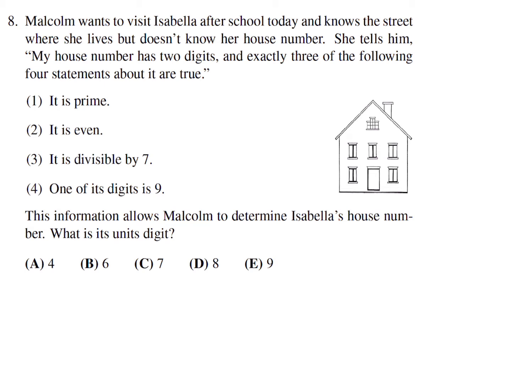Malcolm wants to visit Isabella after school today and knows the street where she lives but doesn't know her house number. She tells him, My house number has two digits and exactly three of the following four statements about it are true. Prime, even, divisible by 7, one digit is 9.